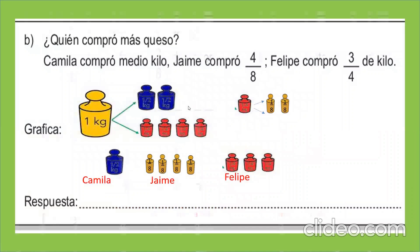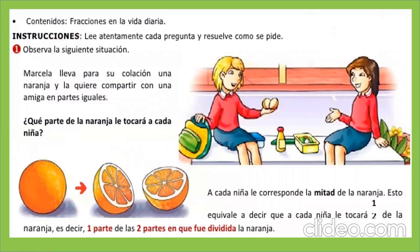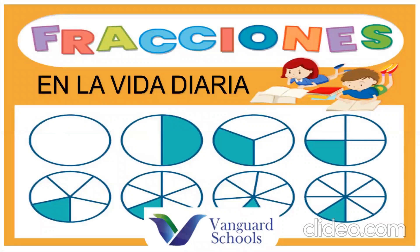Y así, chicos, vamos a poder encontrar muchas fracciones que podemos trabajar desde casa. Por ejemplo, al momento de partir una fruta o un pastel, me va a servir para saber cuántas partes voy a partir. Si somos seis personas en casa y compro un pastel, lo tengo que dividir en seis partes. A cada persona le corresponde un sexto del pastel. ¿Por qué? Porque al juntar todos, obtengo seis sextos, que es la unidad.